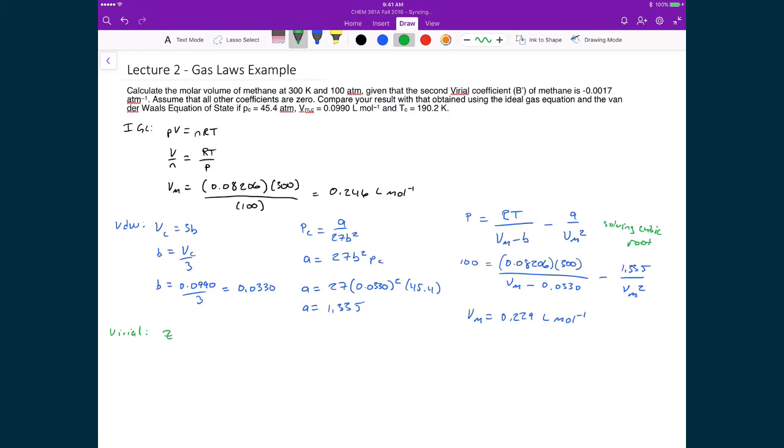So in this case, we can calculate the compressibility Z as being equal to 1 plus B prime times the pressure. And in this case, since the problem itself says all other coefficients are 0, like it says up here, then we don't need to go any further in this expansion. So if we substitute in for numbers, we've got 1 plus B prime in this case is negative 0.0017 times the pressure. That's 100 atmospheres. So my Z in this case is going to be equal to 0.83.